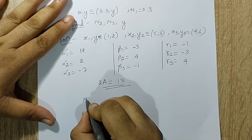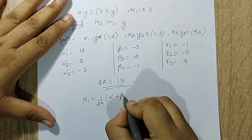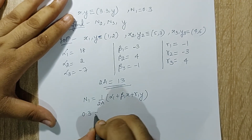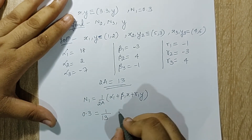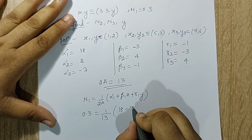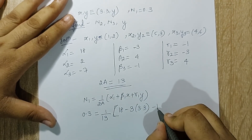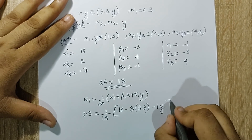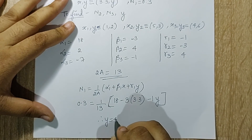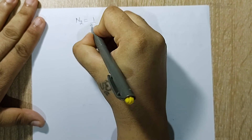Now we will start with n1: 1 upon 2A times (alpha 1 plus beta 1·x plus gamma 1·y). I know n1 is 0.3, 1 upon 2A is 1 upon 13, alpha 1 is 18, beta 1 is minus 3, x is 3.3, gamma 1 is minus 1, and y is unknown. So in this equation the only unknown is y. Solving, I obtain y as 4.2.